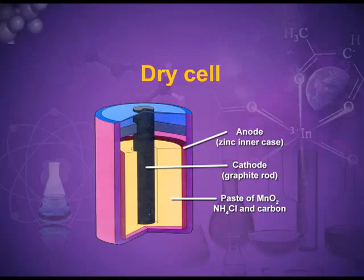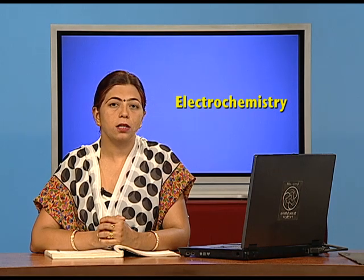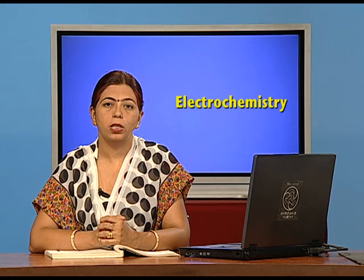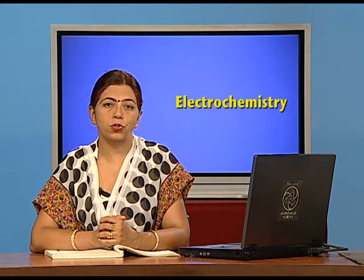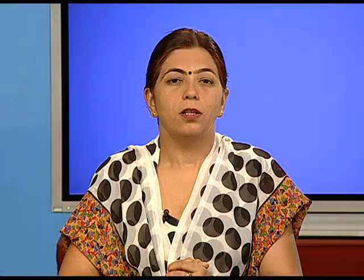The dry cell is a primary battery. It has a zinc container that acts as the anode, and the cathode is a graphite rod surrounded by manganese dioxide. The electrolyte is a paste of ammonium chloride and manganese dioxide. Zinc (anode) loses electrons and is oxidized to Zn²⁺. At the cathode, manganese is reduced from the +4 state to the +3 state by accepting electrons, and ammonia is formed. This ammonia is not released as gas but combines with zinc ions to form a complex. The transfer of electrons from anode to cathode produces electricity.